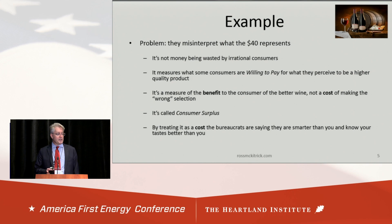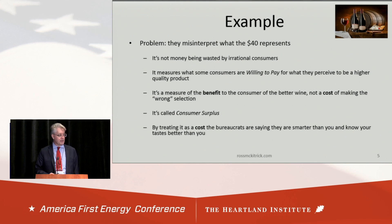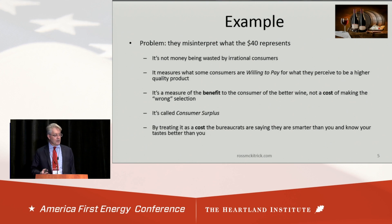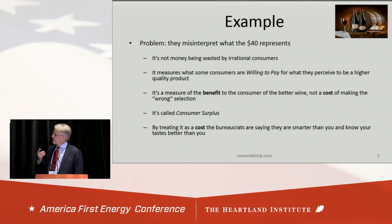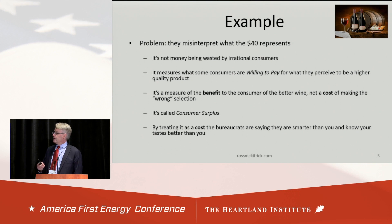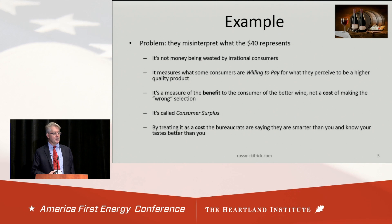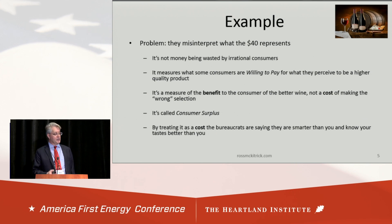Here's the problem. They're misinterpreting what that $40 represents. This is not money being wasted by irrational consumers. It's a measurement of what some consumers are willing to pay for what they perceive to be a higher quality product. In other words, it's a measure of a benefit to the consumer, not a cost of making an irrational decision. It's the subjective preference of the consumer, but it's still the consumer's own decision. It represents a benefit to that consumer of a better wine. In economics, we call that consumer surplus.